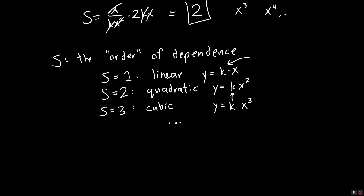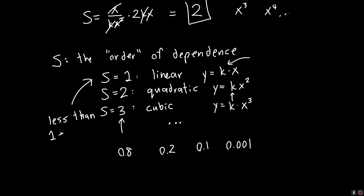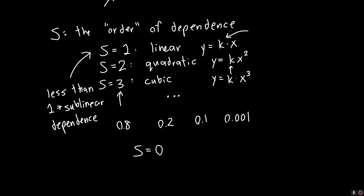Often we won't get a nice number like one, two, or three — sometimes we'll get something like 0.8, 0.2, 0.1, or 0.001. Anything less than one means we have sublinear dependence. A sensitivity of zero just means that y is not a function of x — if we change x it will have no effect on y. Sensitivity of one is a linear relationship, and between zero and one there's this sublinear region.